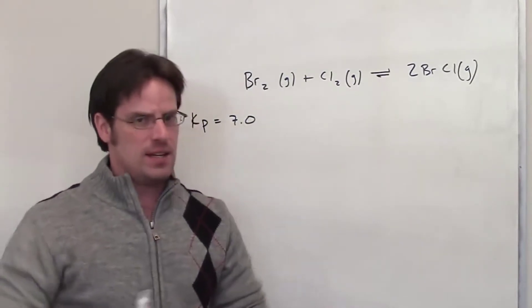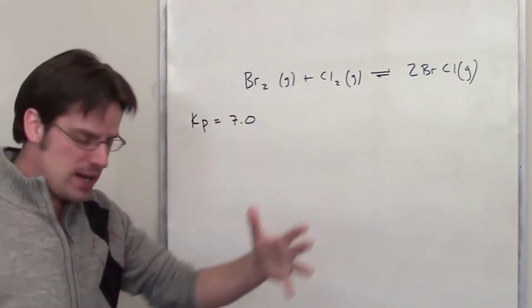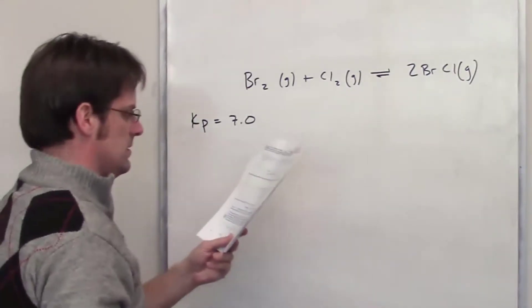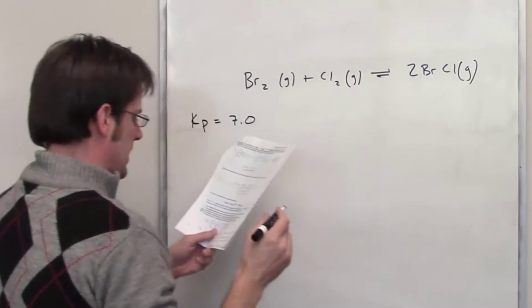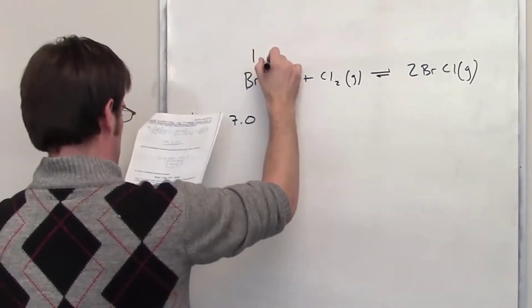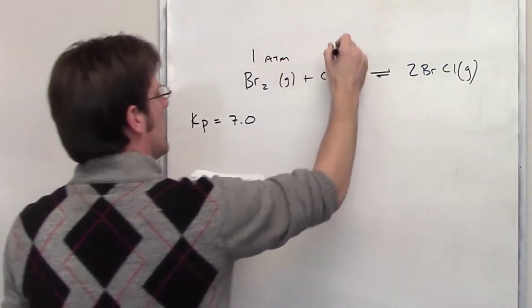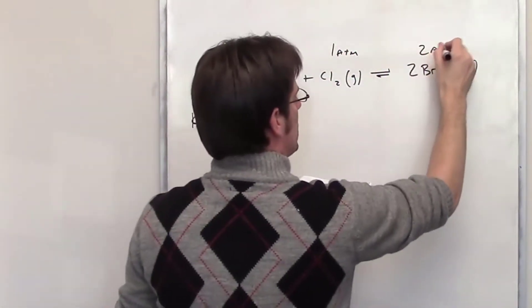At this point it tells us that this reaction is set up and initially right at the setup it gives us the pressures of each of these individual gases. It says that at setup it's filled or there's a chamber filled with one atmosphere of bromine, one atmosphere of chlorine, and two atmospheres of bromine chloride.